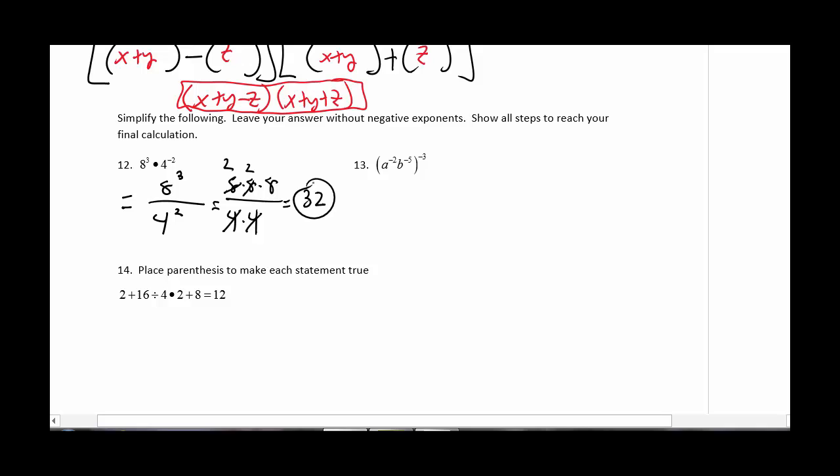In number 13, we have that rule that says if you have an exponent raised to an exponent, then you would multiply those numbers together. So a to the negative 2 would be times negative 3, and b to the negative 5 would be times negative 3 as well. That would be a to the 6 times b to the 15th. And there's our answer.